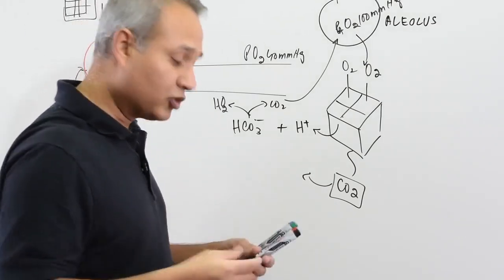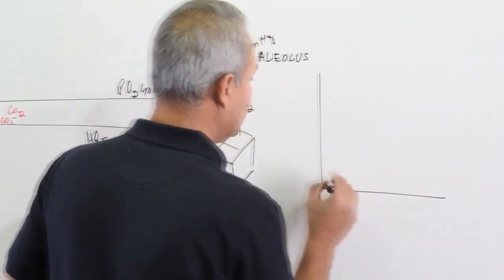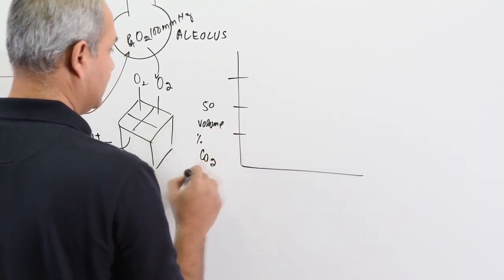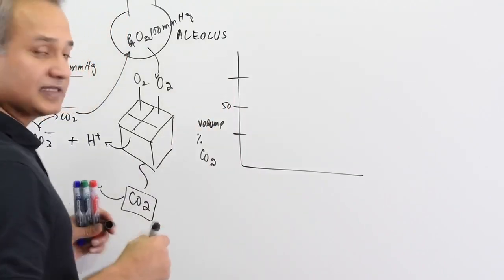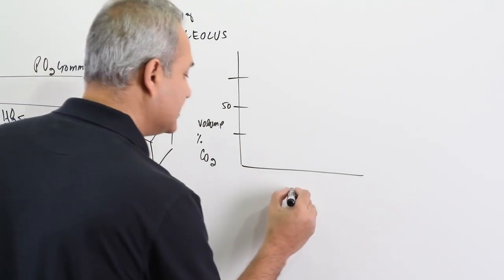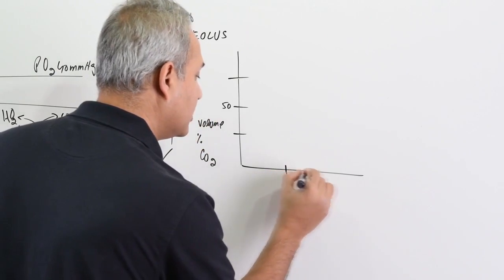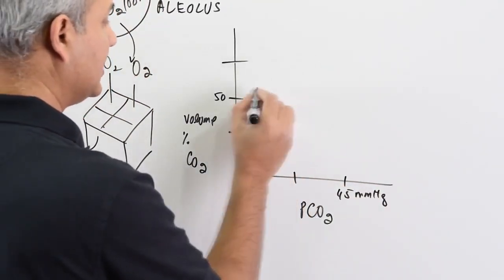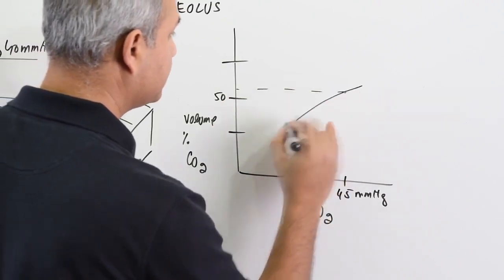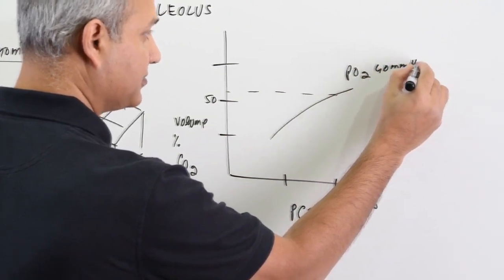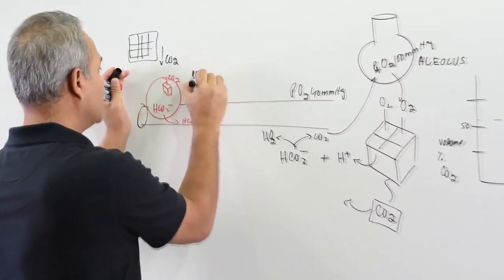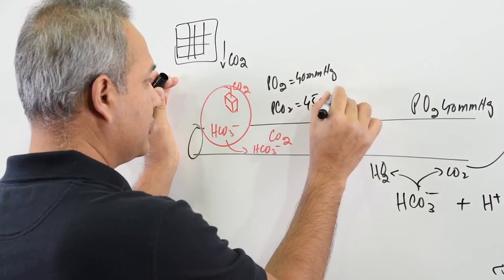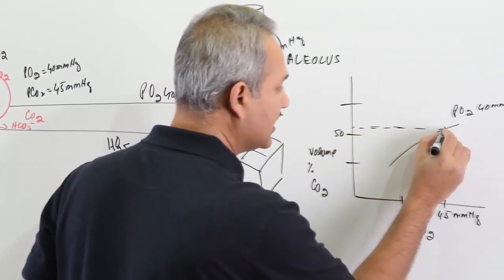Now let us look at how important this effect is quantitatively. The Y-axis represents volume percent of carbon dioxide in the blood. In the tissue, PCO₂ is forty-five millimeter of mercury and PO₂ is about forty millimeter of mercury. At tissue conditions — PO₂ of forty and PCO₂ of forty-five — about fifty-two volume percent of carbon dioxide is loaded.